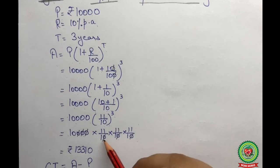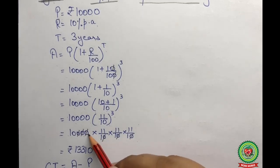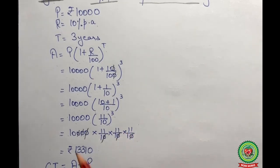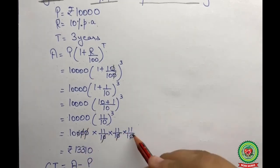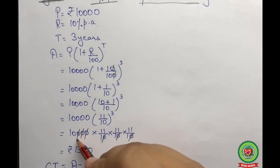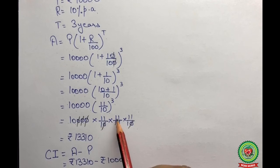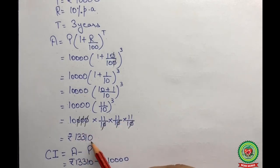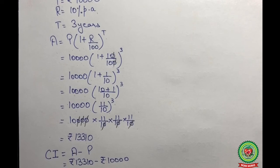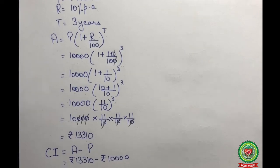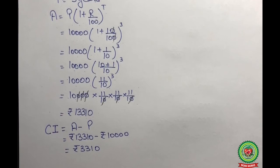We now cancel the zeros: the zero from 10,000 cancels with the first denominator 10, the second zero cancels with the next 10, and the third zero cancels with the last 10. We then multiply 10 × 11 × 11 × 11 and get the answer of 13,310. So the amount is rupees 13,310.